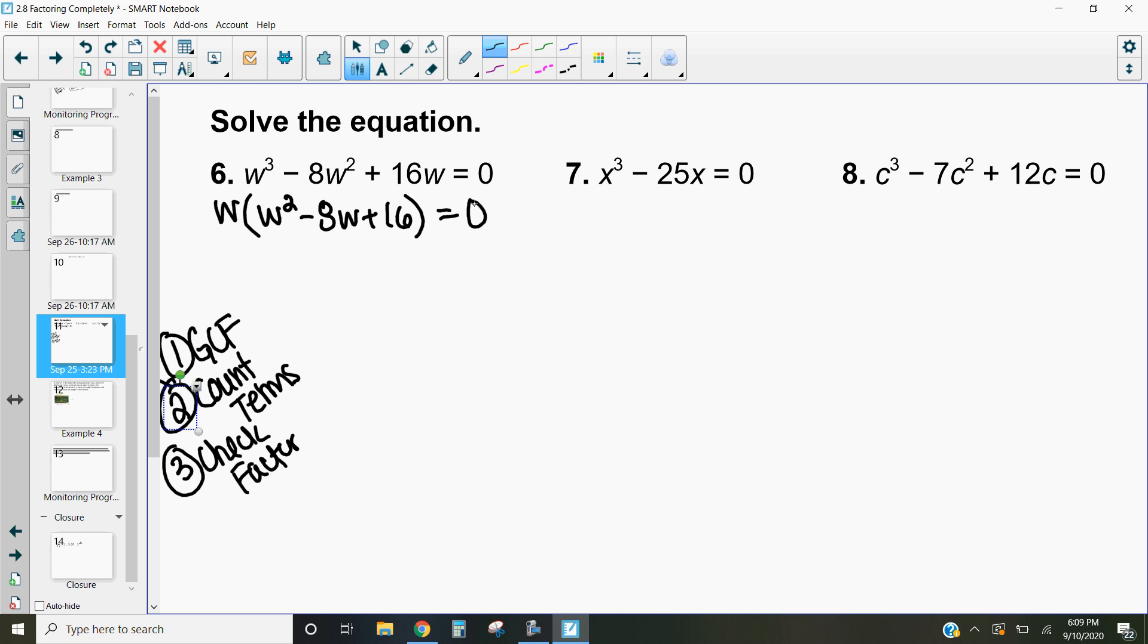The next thing I want to do is count my terms. Here I have a monomial. So remember, monomials cannot factor anymore. Over here, I have a trinomial. So if I have a trinomial, I'm going to factor using my X method.